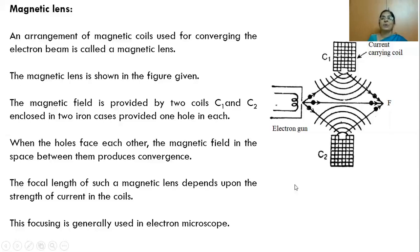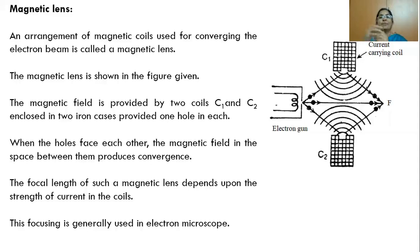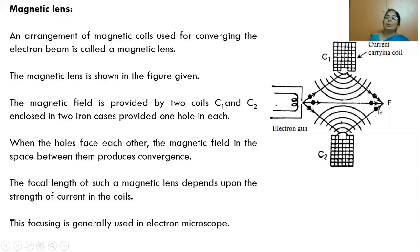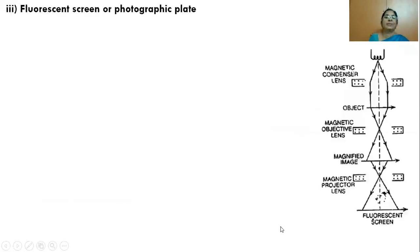We can use an electrostatic field or a magnetic field to perform the focusing action. In general, magnetic fields are used in the electron microscope to perform this converging action.